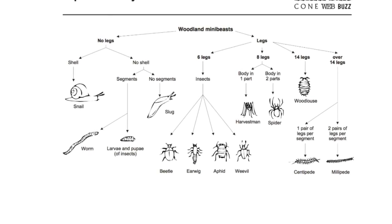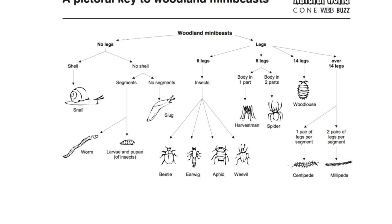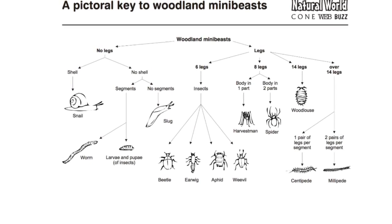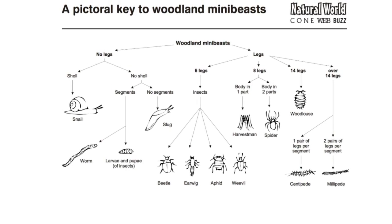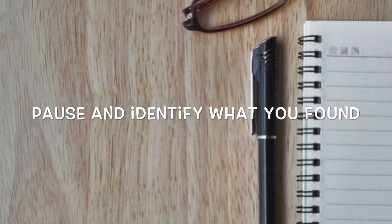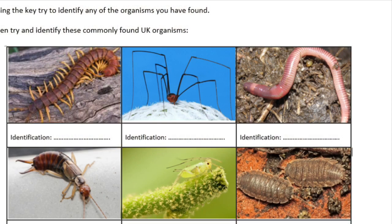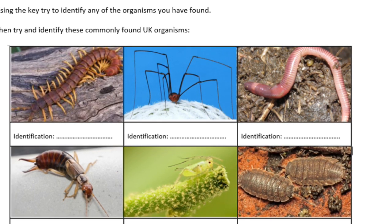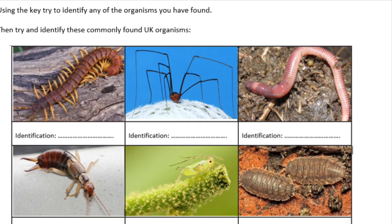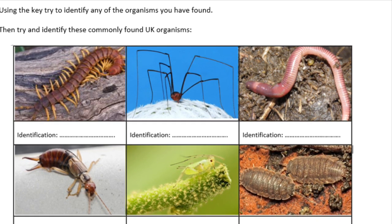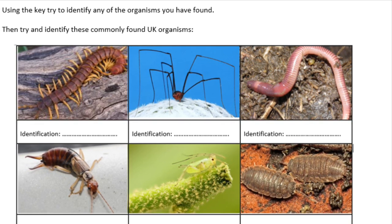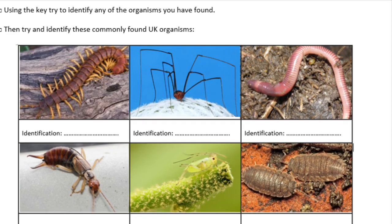Once you've collected some bugs through either of the methods shown, you need to identify them using a pictorial key — just follow the questions to identify whatever it is you're looking at. As well as identifying the organisms you hopefully found, I'd also like you to identify the ones in the table. Pause here and identify the six organisms in the table. Remember to use the key.